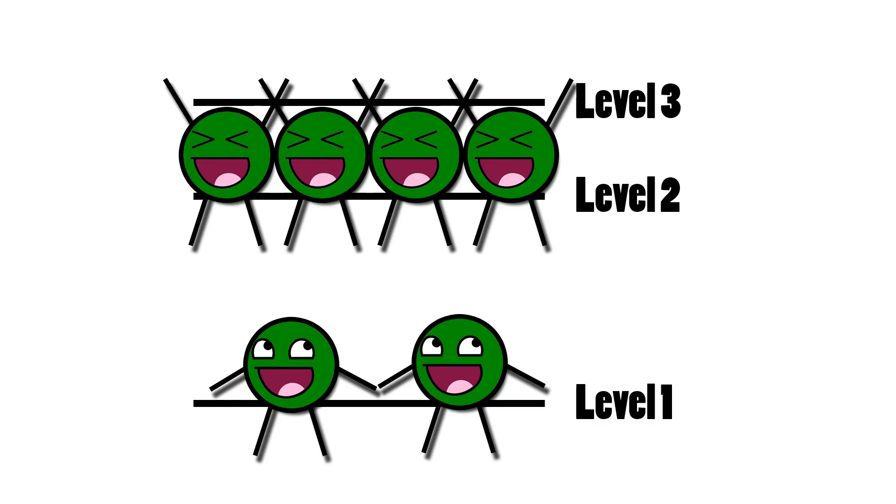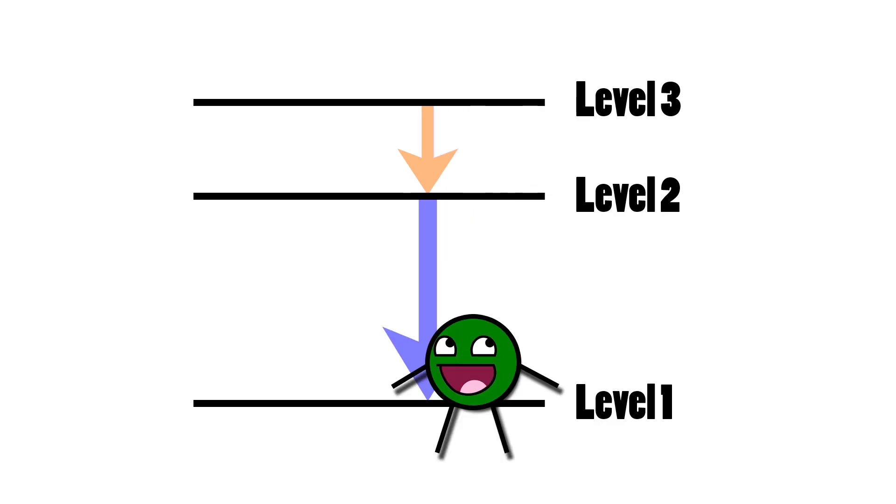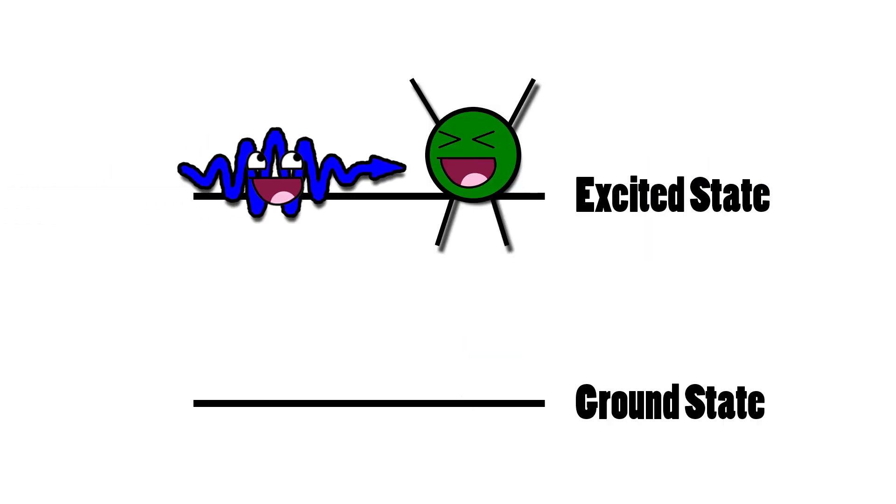That is, there are more atoms in an excited state than in a ground state. A party in the excited state! So when an atom drops to the ground state, the photon released has a pretty good chance of running into another excited atom.